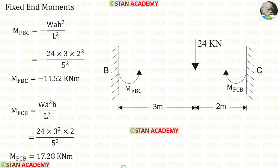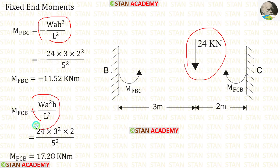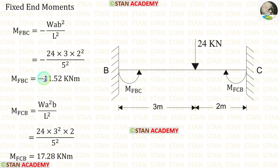Now let us find the fixed end moments in the span BC. In the span BC we have an eccentric point load of 24 kN. The formulas to find the fixed end moments are −WAB²/L² and +WA²B/L². When we apply the values inside the formulas we are getting M_BC and M_CB.